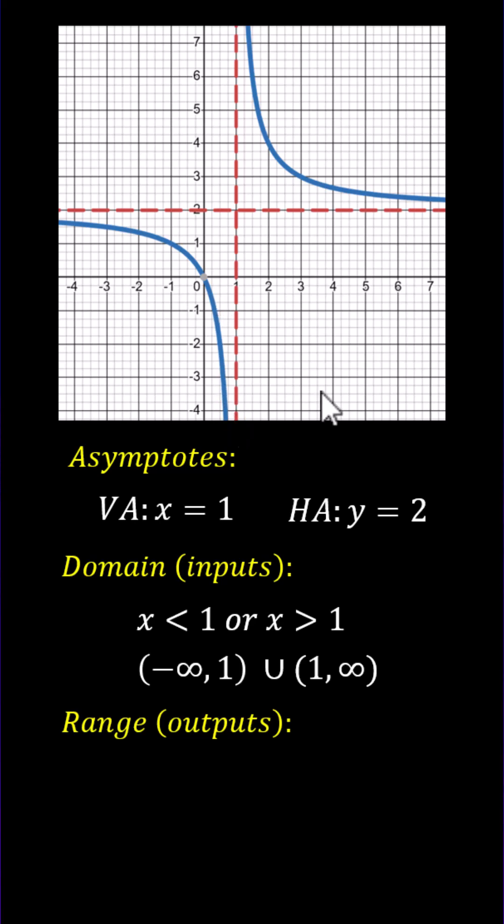This indicates the range is all real numbers except y equals 2, which is y less than 2 or y greater than 2. We're using interval notation, the open interval from negative infinity to 2, union the open interval from 2 to infinity.